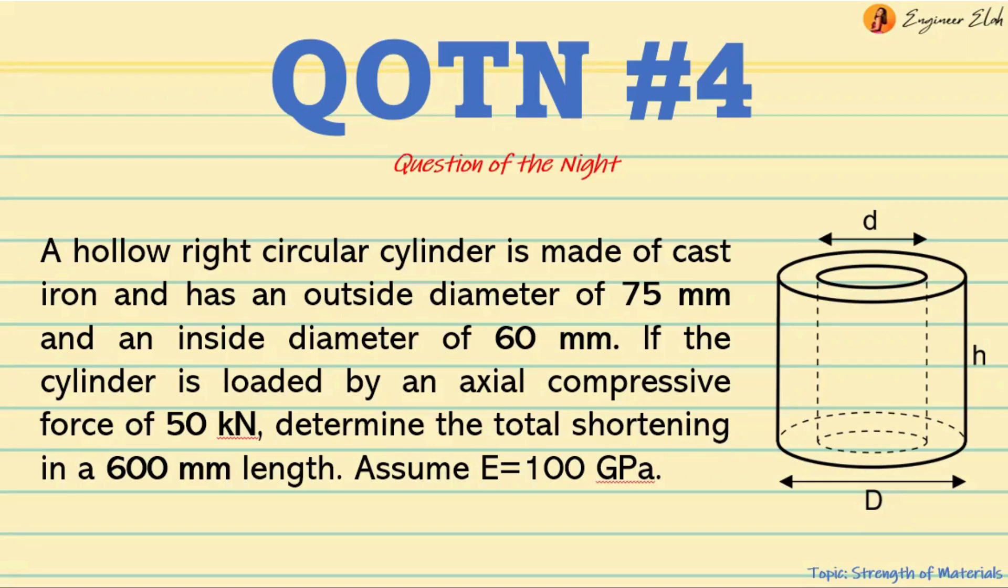A hollow right circular cylinder is made of cast iron and has an outside diameter of 75 millimeters and an inside diameter of 60 millimeters. If the cylinder is loaded by an axial compressive force of 50 kilonewtons, determine the total shortening in a 600 millimeter length.